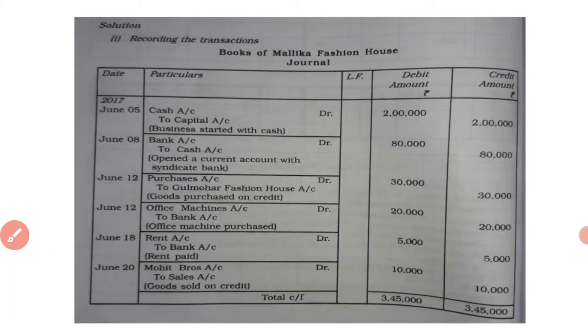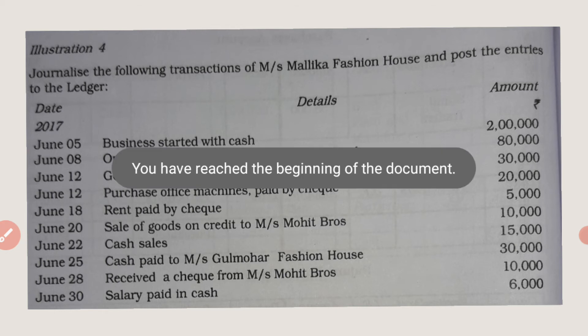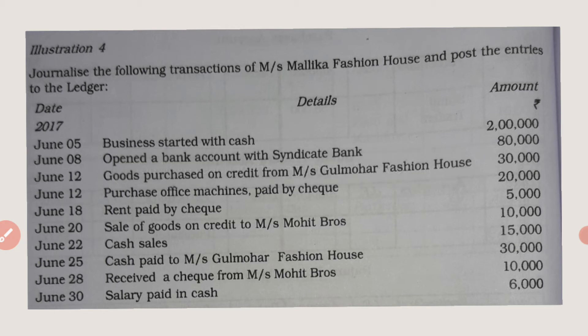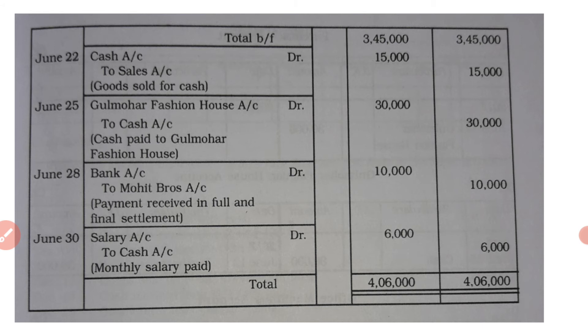June 28: received a cheque from Majors Mohit Brothers — goods sold on credit on June 20, and payment received by cheque on June 28, so bank account debited to Mohit Brothers account. Debit 10,000, credit 10,000. Narration: being payment received in full and final settlement.